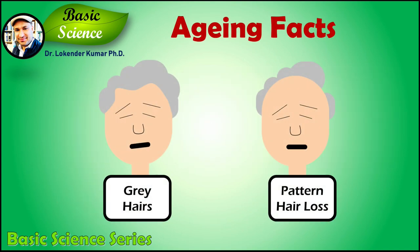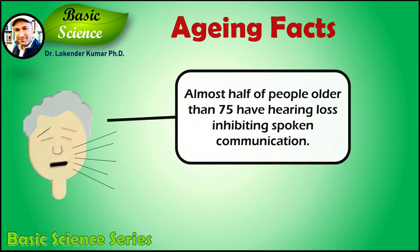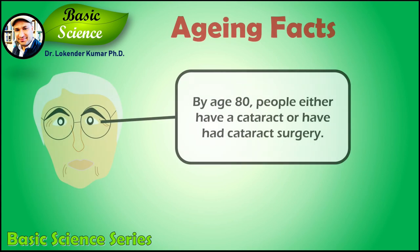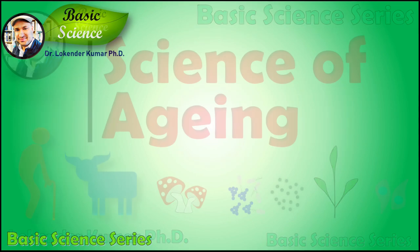Gray hairs and pattern hair loss by age 30 to 50 affect about 30 to 50 percent of males and many females. In females, menopause typically occurs between 49 and 52 years of age. Almost half of people older than 75 have hearing loss inhibiting spoken communication. By age 80, people either have a cataract or have had cataract surgery.